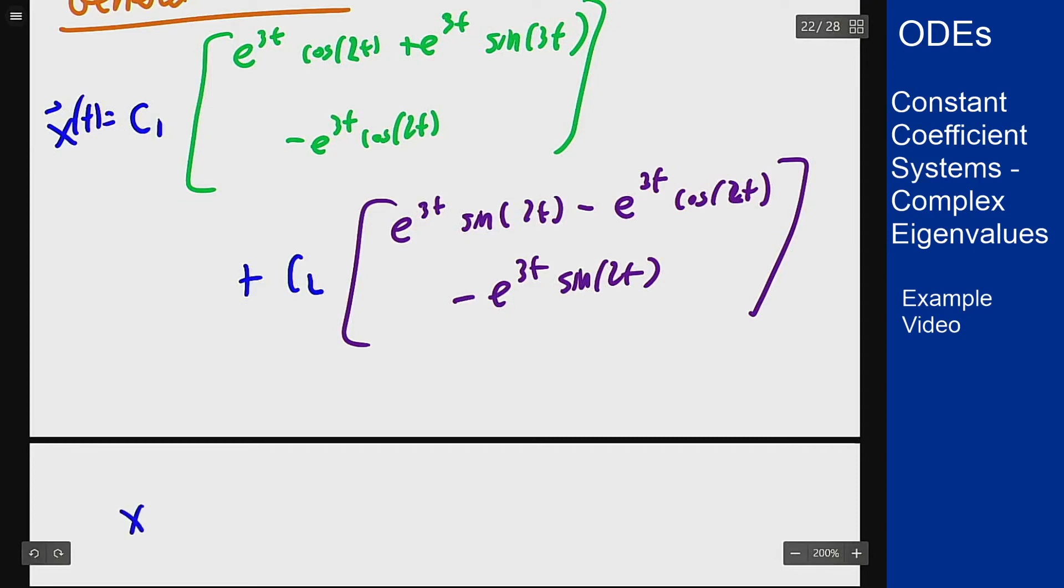So at t = 0 all the exponentials go to 1, cosine goes to 1, and sine goes to 0. So I will get c₁ times this green vector which becomes [1; -1] plus c₂ times the purple vector which is [-1; 0]. I wanted this to equal the vector [3; 2].